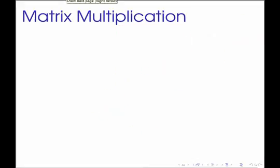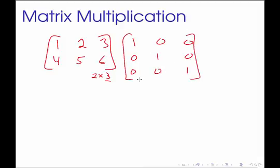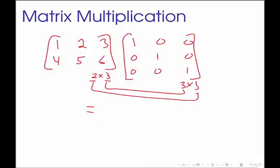This matrix is what we call the identity matrix, denoted by the capital letter I. It is always square, with ones down the main diagonal and zeros everywhere else. The identity behaves like the number one — multiplying the identity matrix by any other matrix gives the same matrix back. For example, if I take the two-by-three matrix [1, 2, 3; 4, 5, 6] and multiply it by the three-by-three identity, the inside dimensions match and I get the same matrix back: [1, 2, 3; 4, 5, 6].